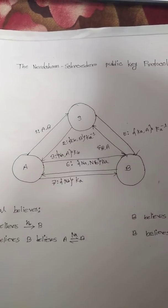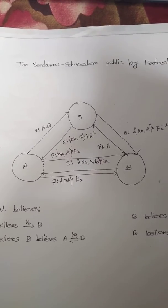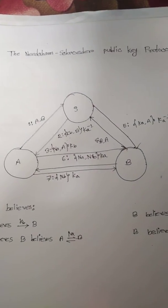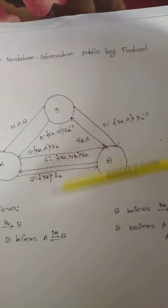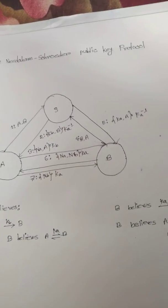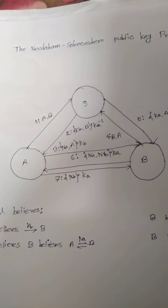The message is encrypted with B's public key, and B decrypts it using his private key. In step four, B sends a request to S for A's public key.